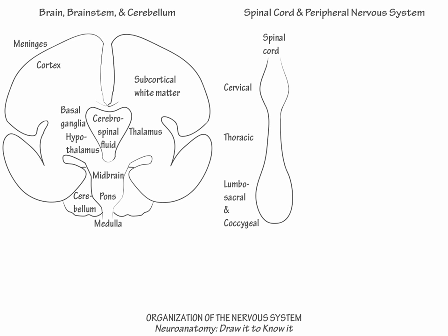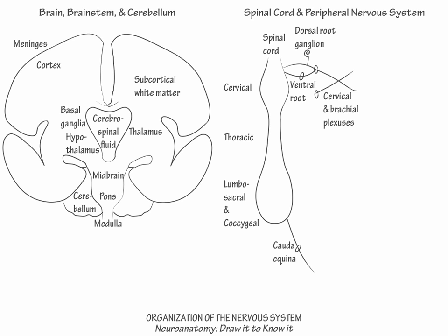Draw a dorsal nerve root off of the posterior spinal cord. Identify it with its dorsal root ganglion, which houses the sensory cell bodies. Then draw the ventral root from the anterior surface of the spinal cord; it contains the motor fibers that exit from the gray matter. Show that the motor and sensory roots meet to form a mixed spinal nerve within a neural foramen. Then show that the cervical nerves interweave to form the cervical and brachial plexuses, and that the lower lumbosacral nerve roots descend through the lumbar cistern and exit the spinal canal to form the lumbosacral plexus.